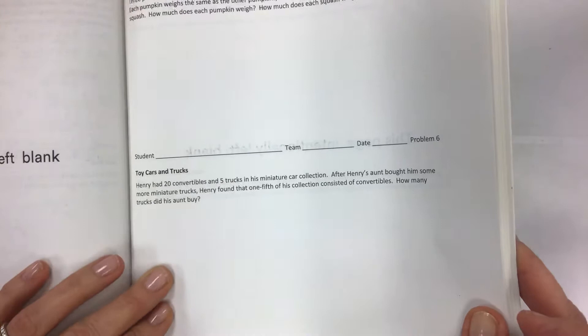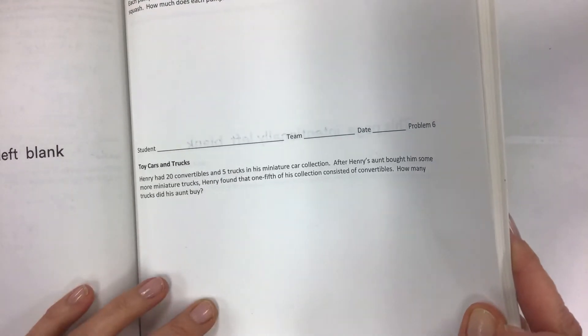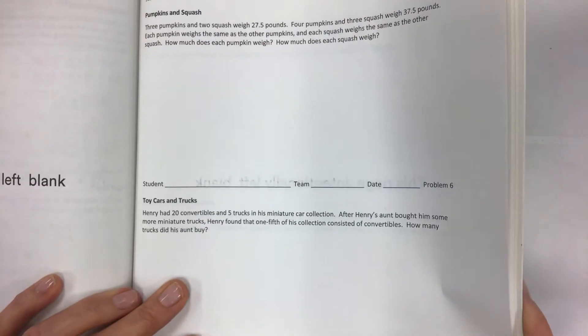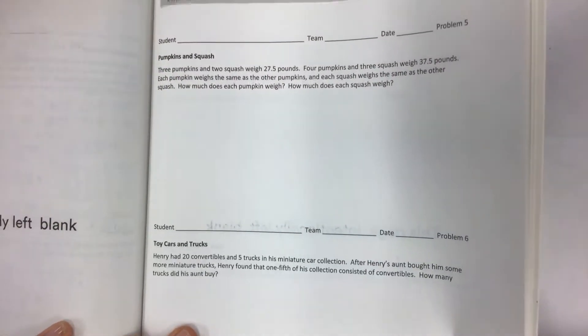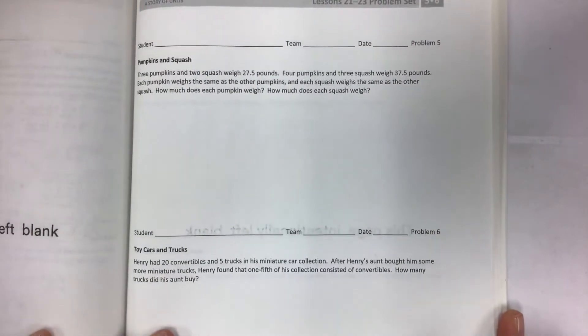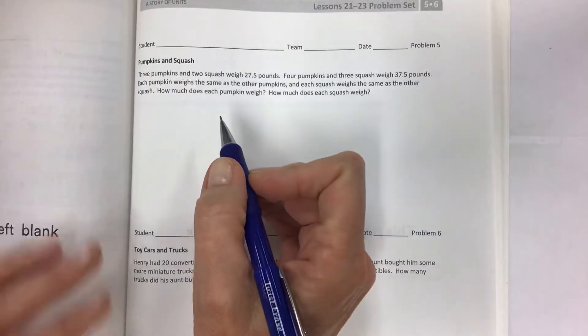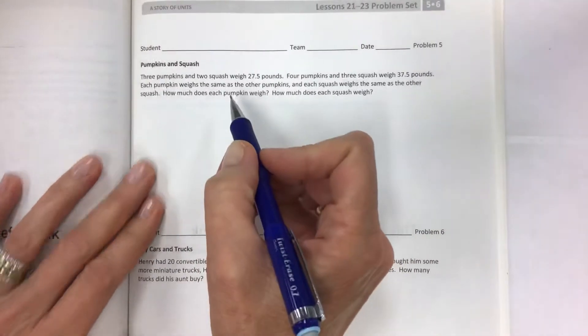Let's jump right into problem 5. By the way, the objective for this lesson and the lessons 21, 22, 23 makes sense of complex multi-step problems and persevere in solving them. Share and critique peer solutions. So you definitely want to have somebody around to talk to because it's really important to bounce your ideas off somebody else when you're able.